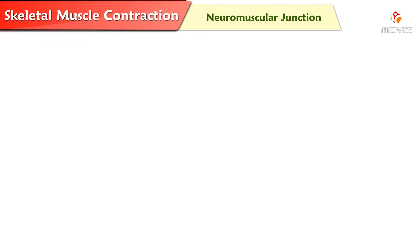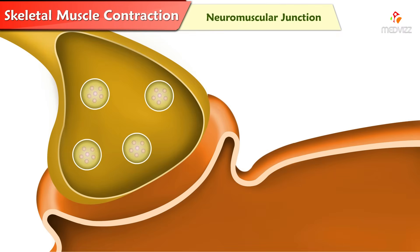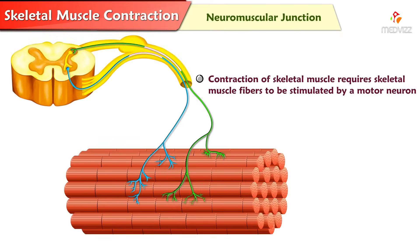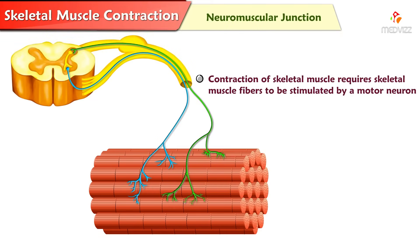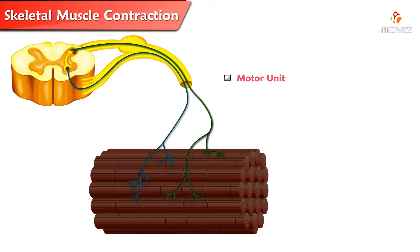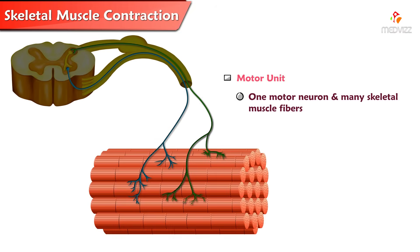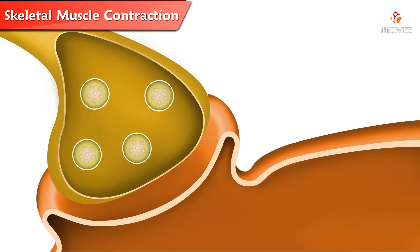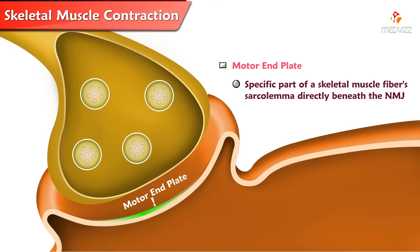Skeletal Muscle Contraction. The Neuromuscular Junction is the site where a motor nerve fiber and a skeletal muscle fiber meet, also called synapse or synaptic cleft. In order for a skeletal muscle to contract, its fibers must first be stimulated by a motor neuron. Motor Unit is one motor neuron and many skeletal muscle fibers. Motor End Plate is the specific part of a skeletal muscle fiber sarcolemma directly beneath the neuromuscular junction.